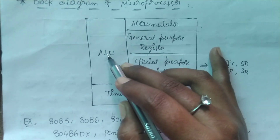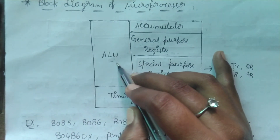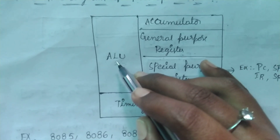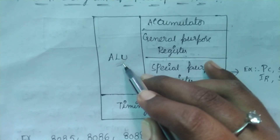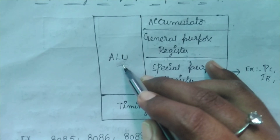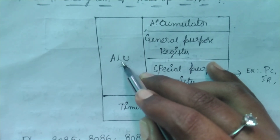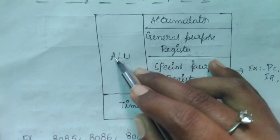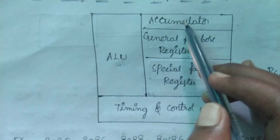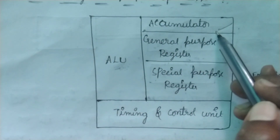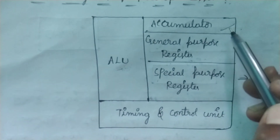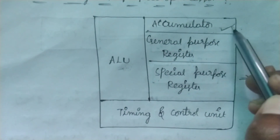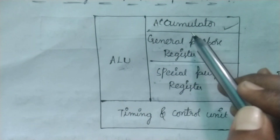The Arithmetic and Logic Unit is used in the microprocessor to perform arithmetic operations such as addition, subtraction, multiplication, division, and modulus, and logical operations such as AND, OR, NOT, XOR, XNOR, NAND, and NOR. The resultant output of these operations is stored in the accumulator register. After completion of arithmetic and logical operations, the resultant output is stored in the accumulator.